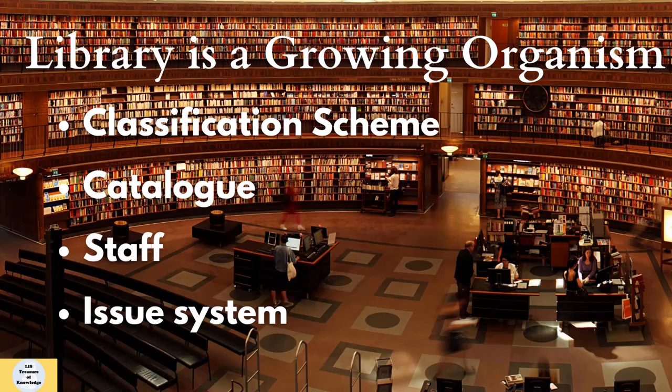The library should do indexing of the library collection by author, title, and subject entries. With the growth in the number of books, the size of the catalog should be adjusted accordingly. Qualified and trained staff should be recruited to make library services effective, as mutual understanding and cooperation will be beneficial for the library's growth. Growth in the library will also increase circulation work, so a proper issue system should be in place.